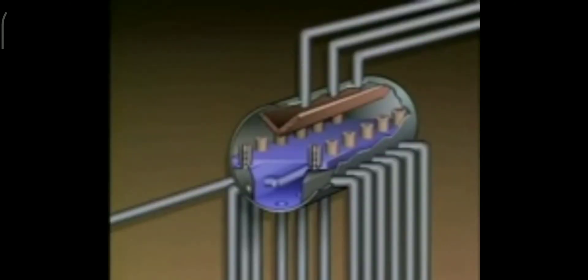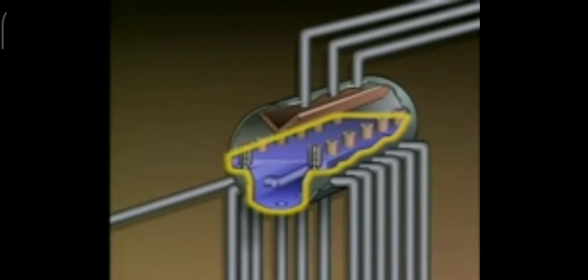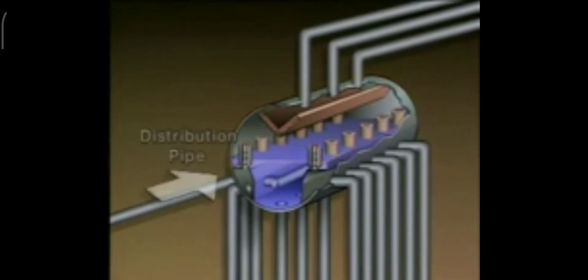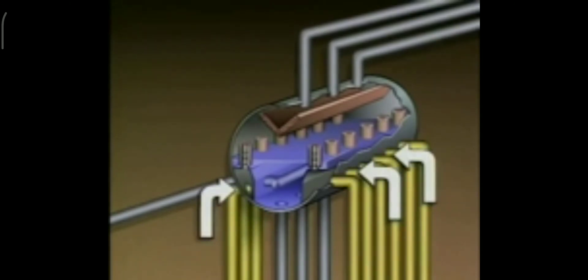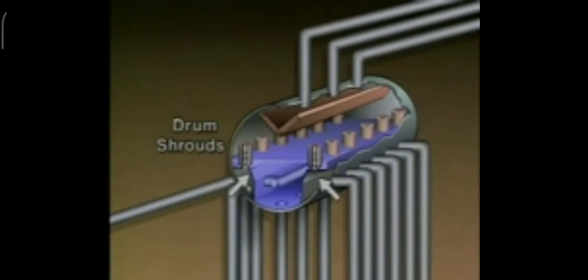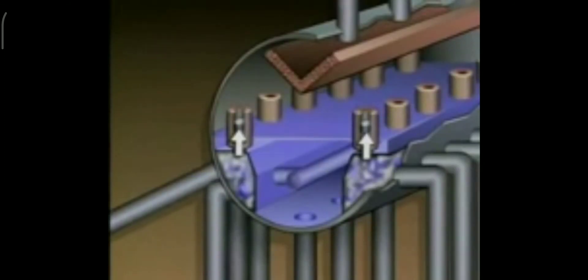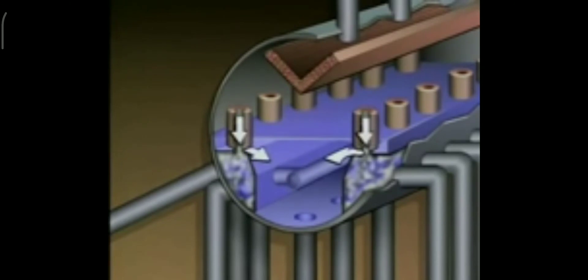A boiler drum has two main functions. The bottom part of the drum contains water to be circulated back through the boiler. The top part of the drum is used to collect steam. Heated feed water is fed into the drum through a distribution pipe. The drum is usually kept about half full of water. The mixture of water and steam that returns to the drum from the water walls is directed against baffles called drum shrouds that run the length of the drum. The shrouds direct the mixture into moisture separators, which are located at the top of the shrouds. The moisture separators separate the water from the steam. The water falls into the lower part of the drum, where it mixes with the feed water.